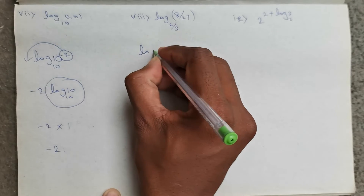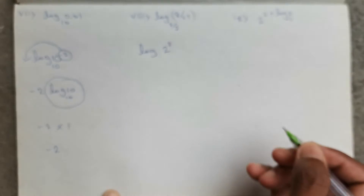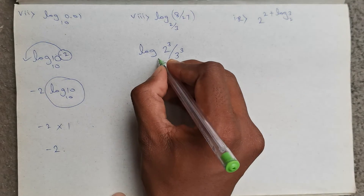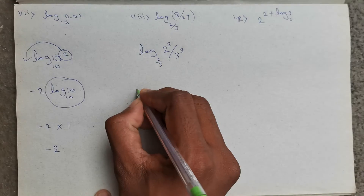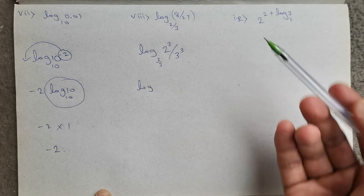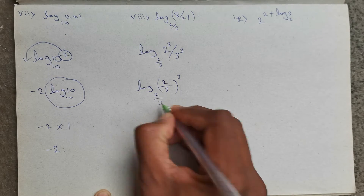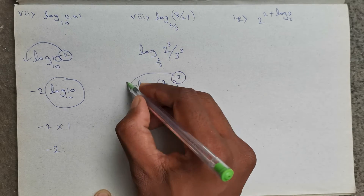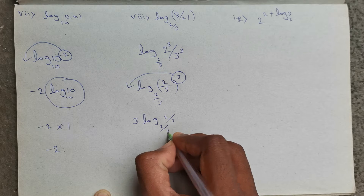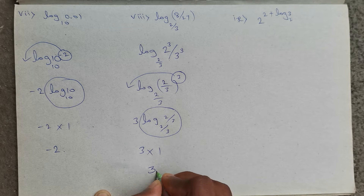Next, log (8/27) base (2/3). 8 can be written as 2 cubed divided by 27 written as 3 cubed. So 2 cubed divided by 3 cubed can be written as (2/3) whole power 3, base (2/3) as it is. Now this 3 will go to the front: 3 times log (2/3) base (2/3). Log (2/3) base (2/3) value is 1. So 3 into 1, which is nothing but 3.